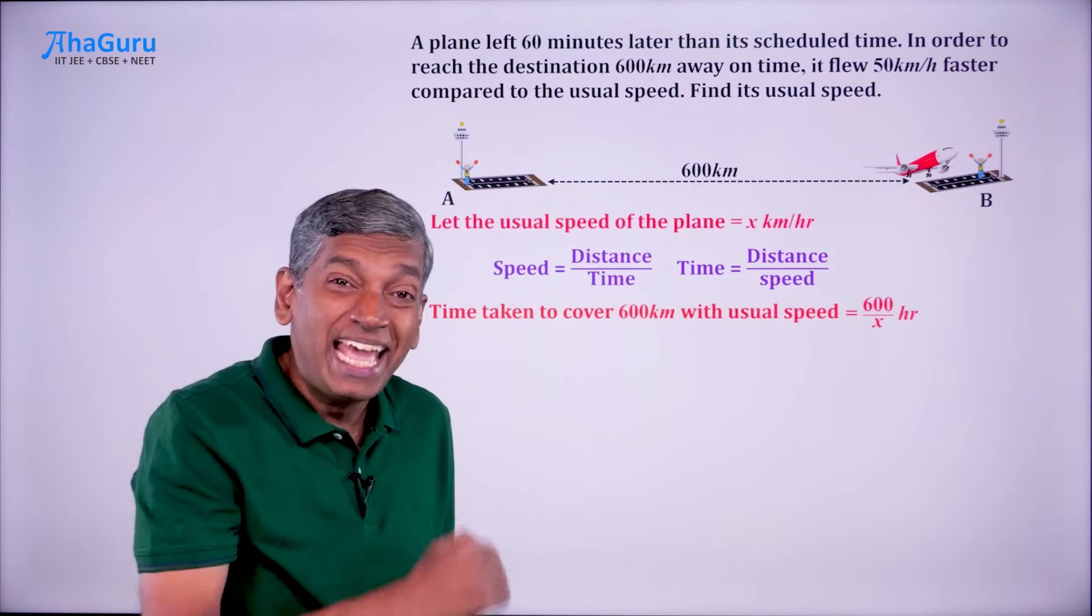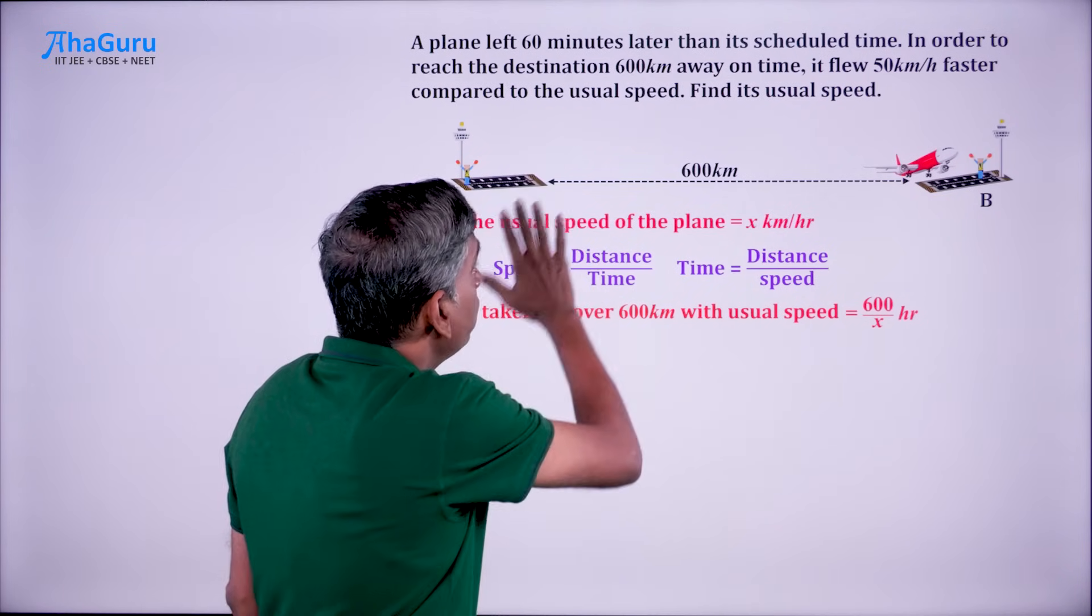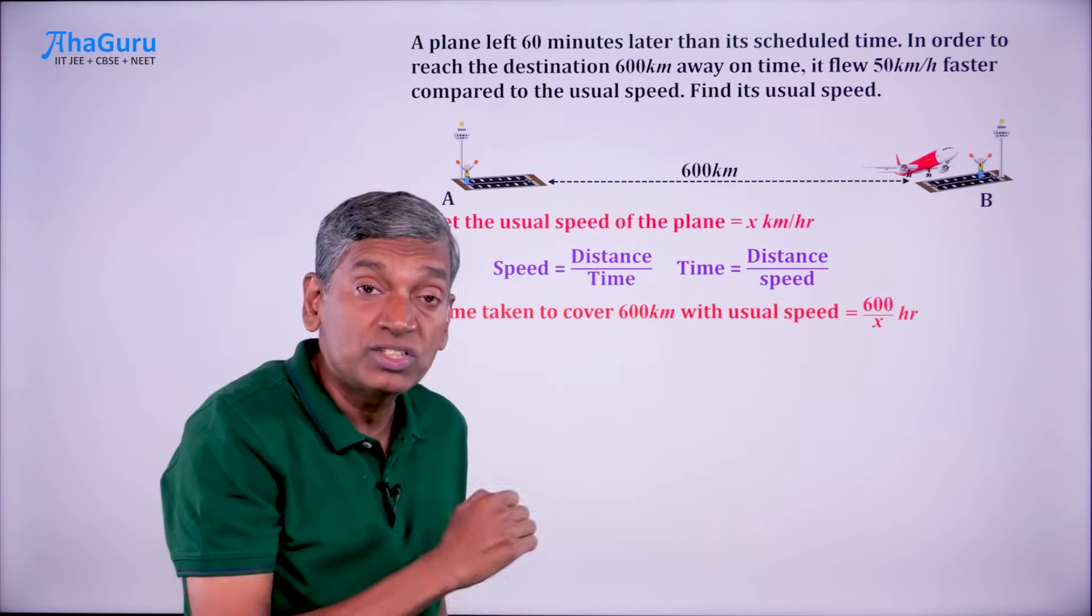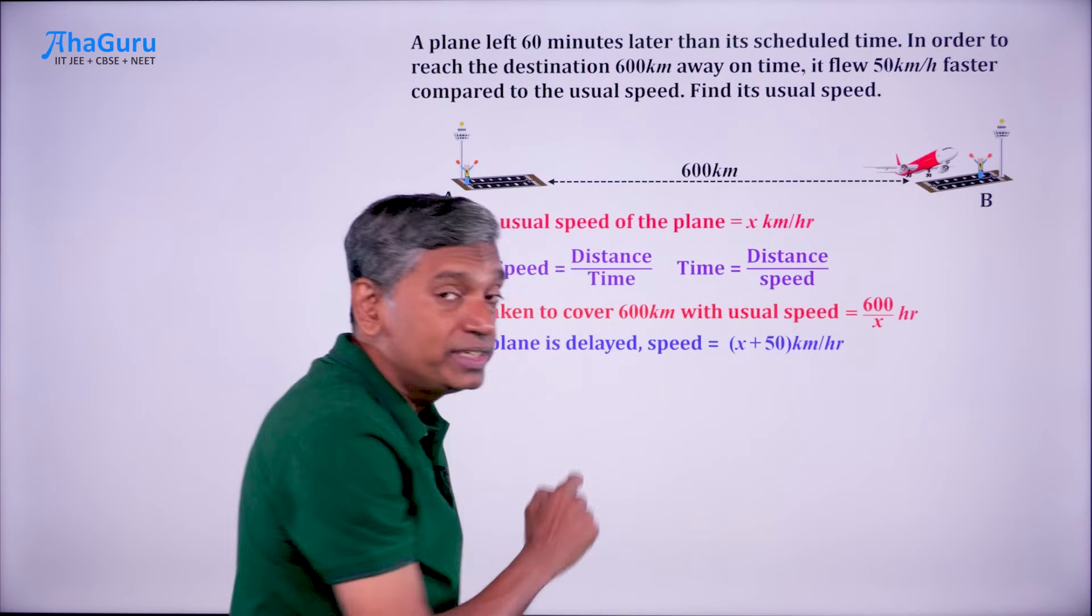Now, when the plane is delayed, what happens? It is going to fly faster. How much faster? It is going to fly at the speed of x plus 50.